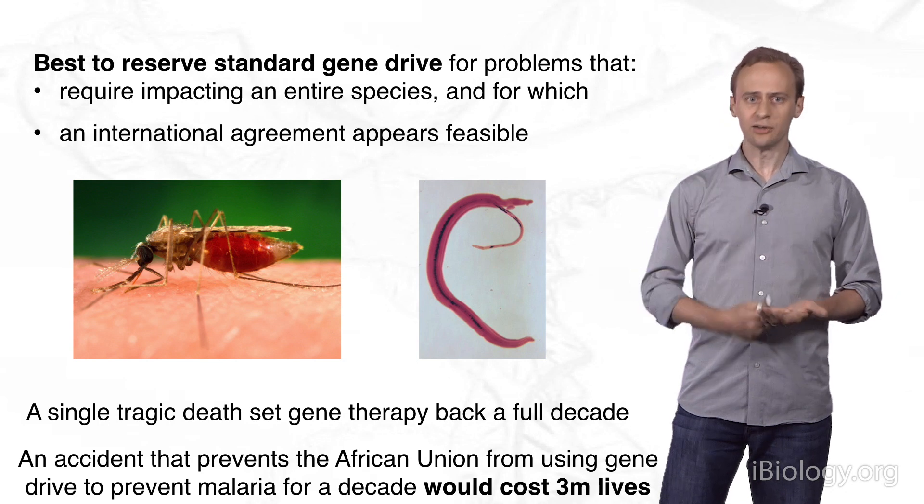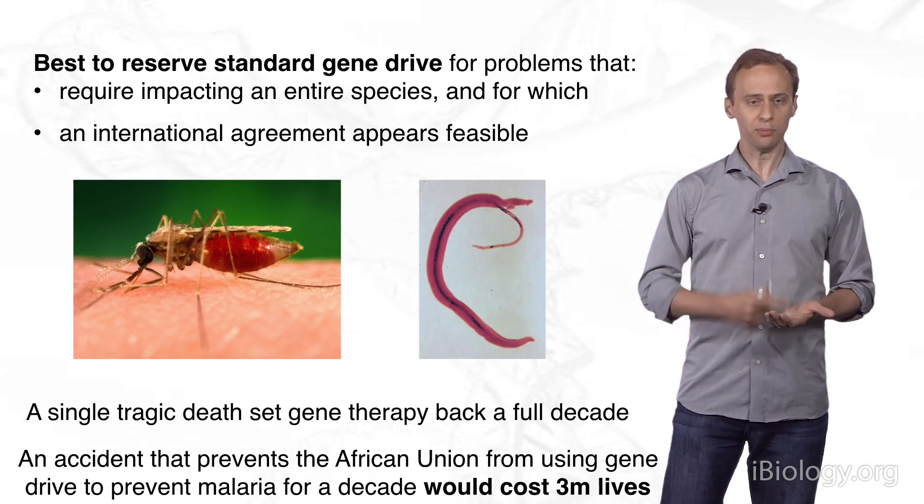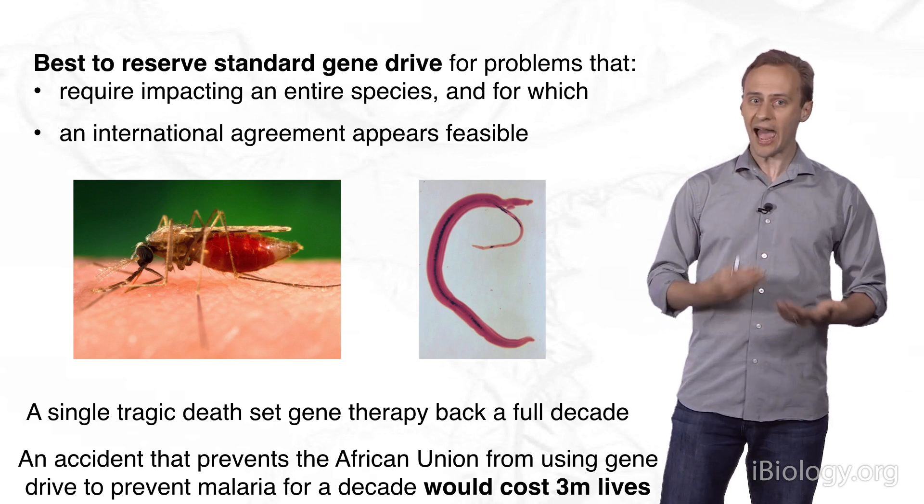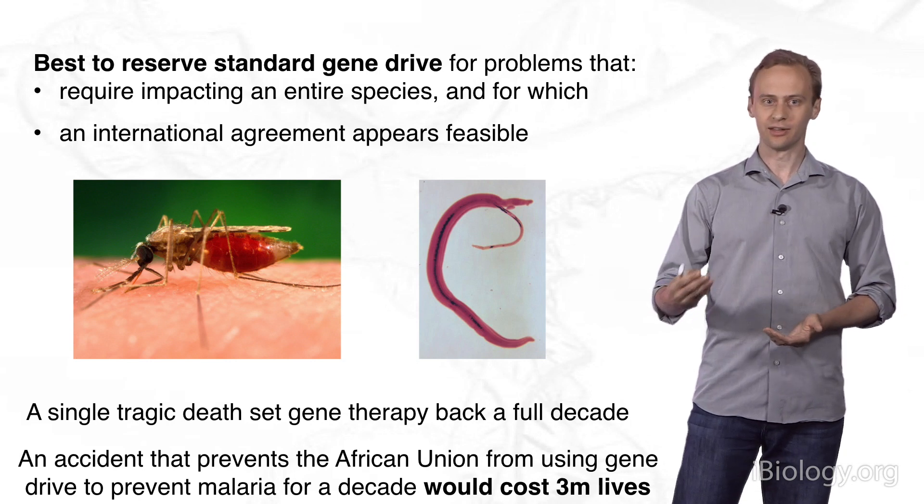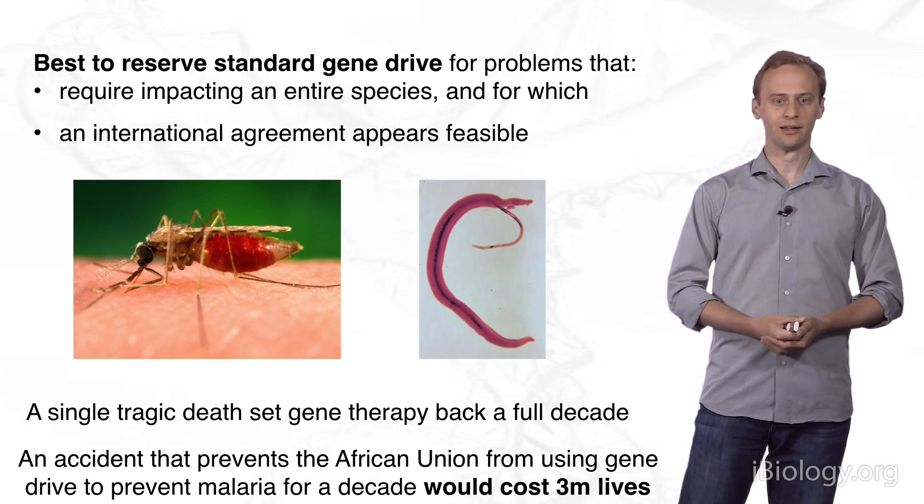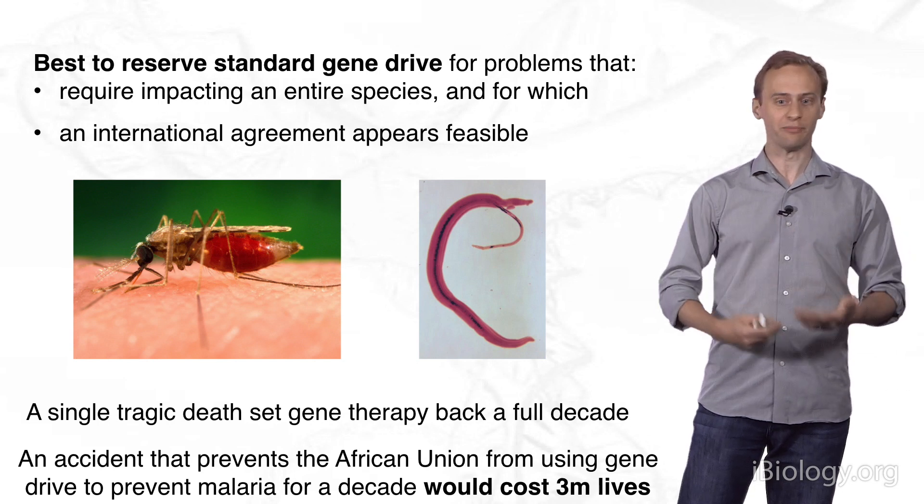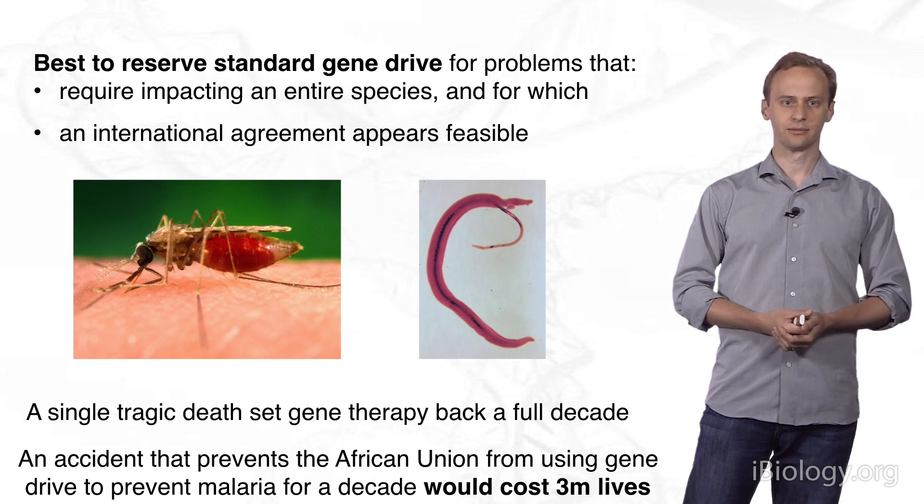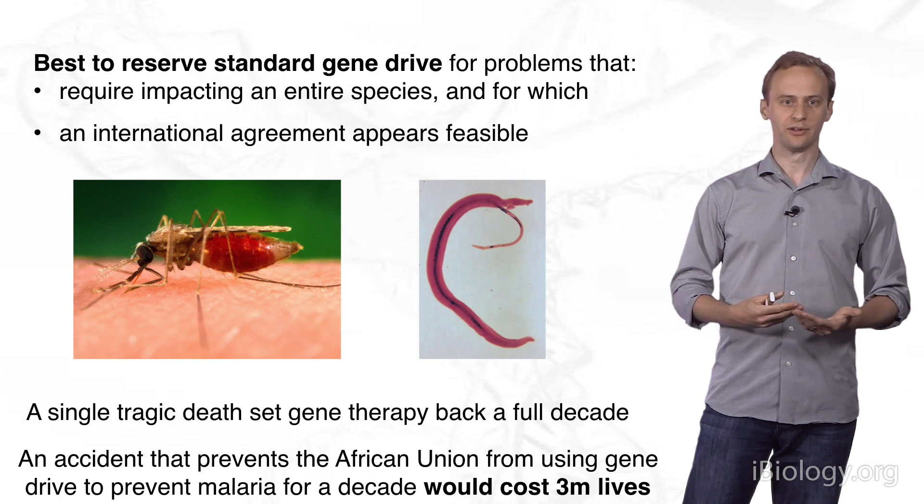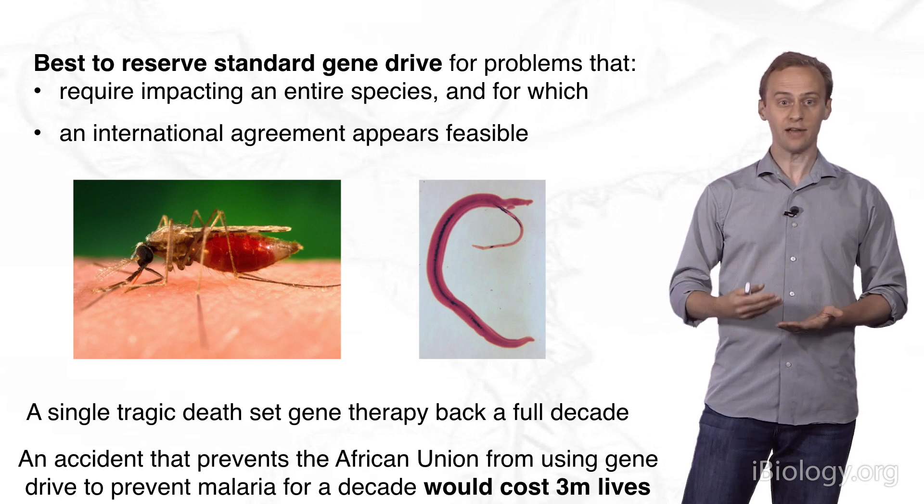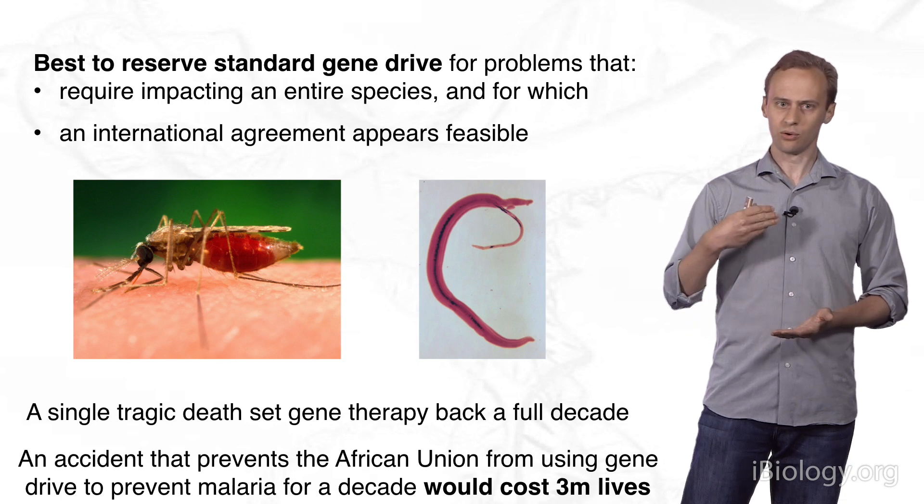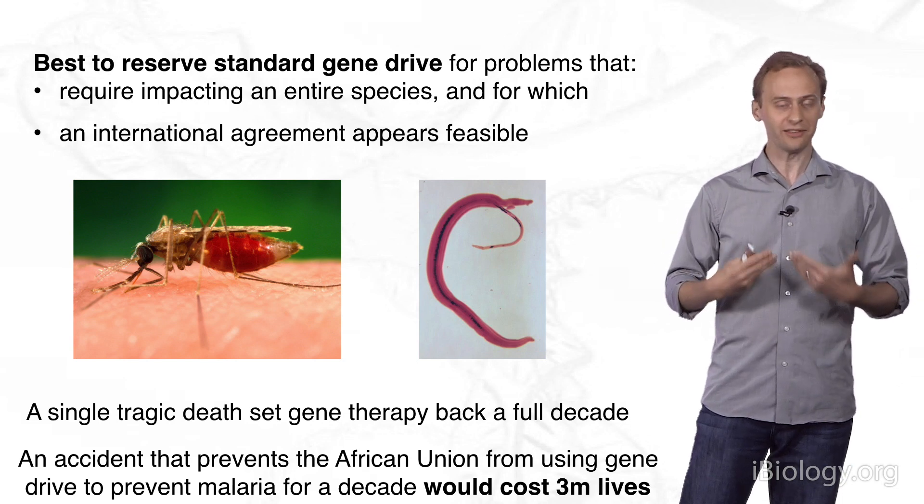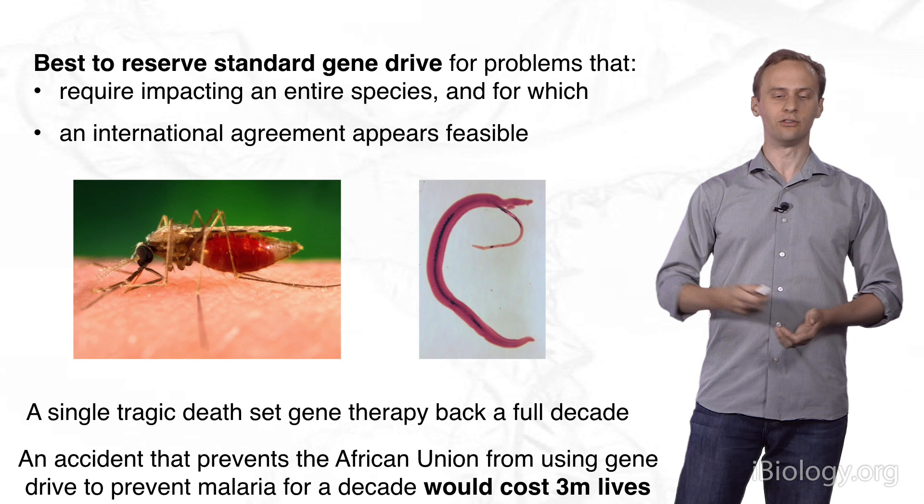But we have to keep in mind that a single tragic death in an ill-planned clinical trial set the field of gene therapy back by a full decade. Any accident involving gene drive that prevented the countries of the African Union from deciding to use it to prevent malaria, if that set back the effort by just a decade, the expected cost would be three million lives, at least. Everyone working with gene drive needs to be aware that lives are literally hanging in the balance. When we are developing our safety protocols and taking precautions and even deciding, should we be running these experiments in the first place, that is what is at stake.